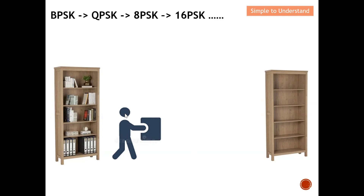Your boss still insists you deliver the books faster to achieve better throughput. You run out of ideas, so you think of another approach: instead of carrying one book, you now take two books and move from left to right. Carrying two books means you carry more data per trip, so your throughput increases. This is the key motivation — for higher PSK levels, instead of carrying one book you carry more books, increasing data transfer throughput.